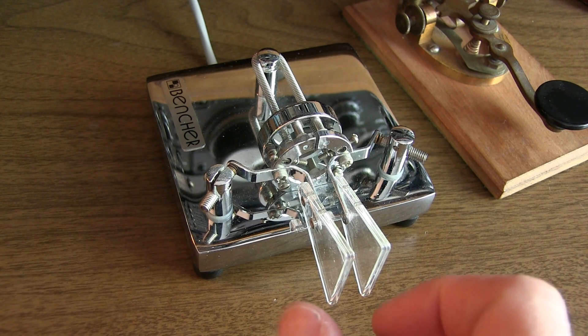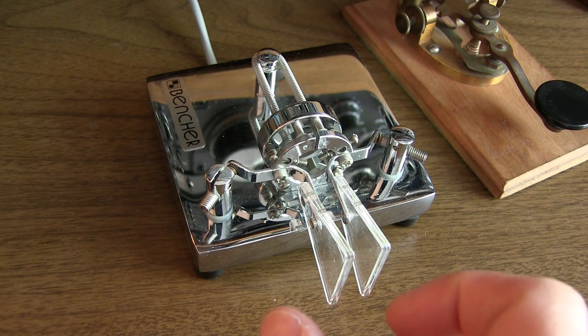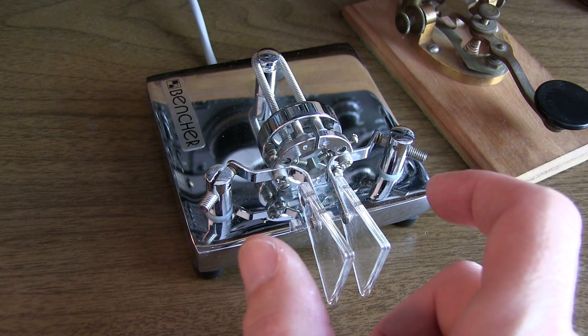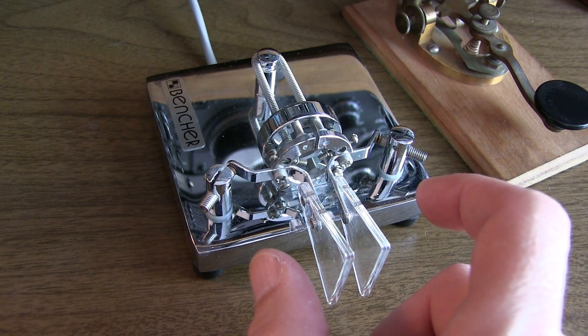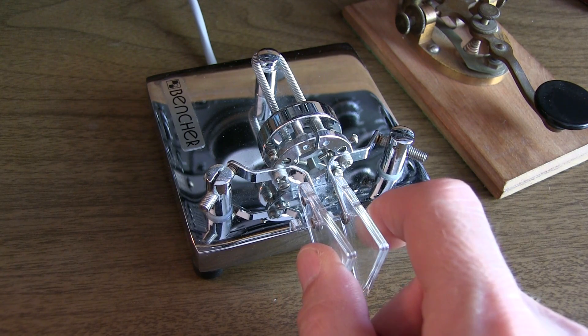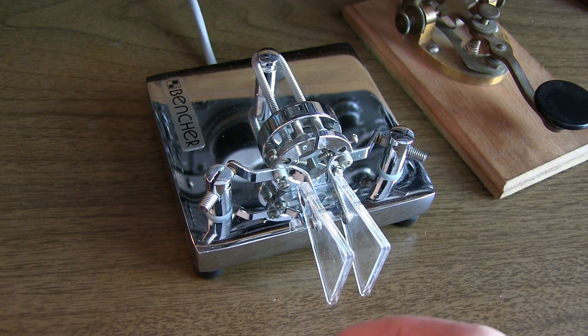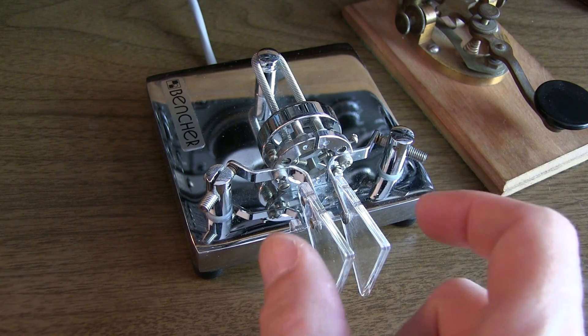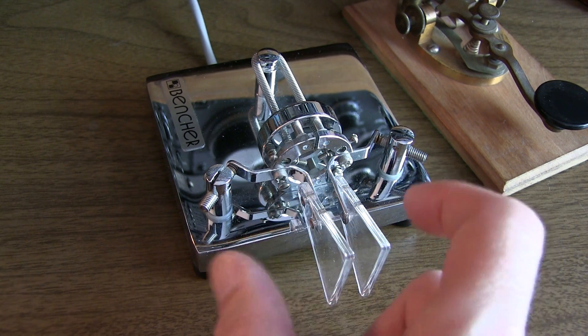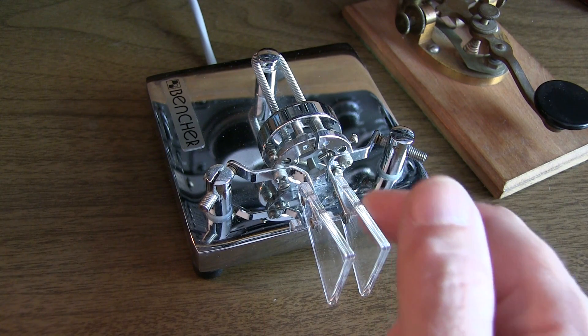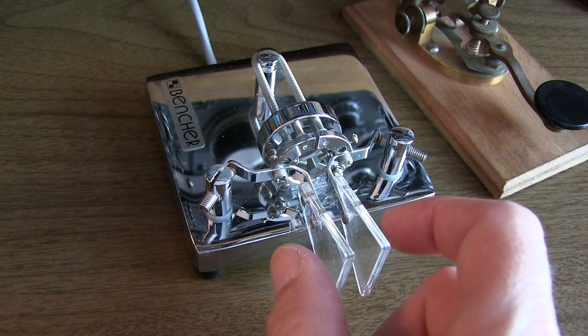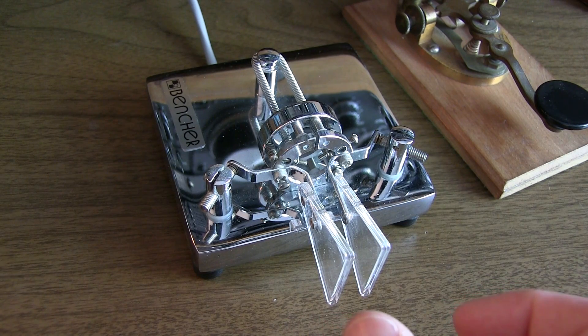But there's one more aspect of using a keyer called iambic keying that can help even further. Iambic keying refers to what happens when you squeeze both paddles at the same time. This can do two different things for you. One thing it can do is to create a continuous string of dits and dahs in a row, such as the period character. When squeezing the paddles to create a continuous string of alternating elements, the element you start with depends on which paddle was depressed first. So for example, if I want to send the letter c, which is dah-dit-dah-dit, I would squeeze the paddles, but also make sure that I depress the dah paddle just slightly before the dit paddle, and then release them just as the last element is completing. This iambic mode is called mode A.